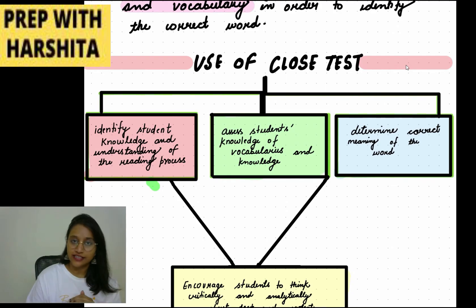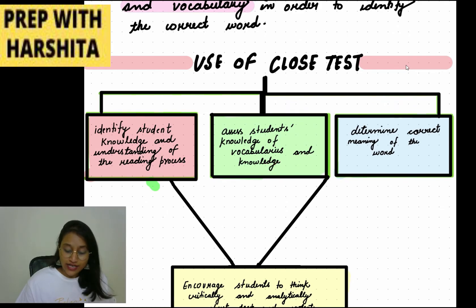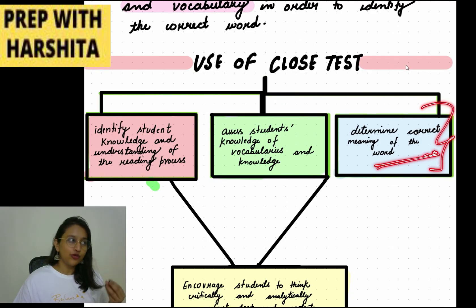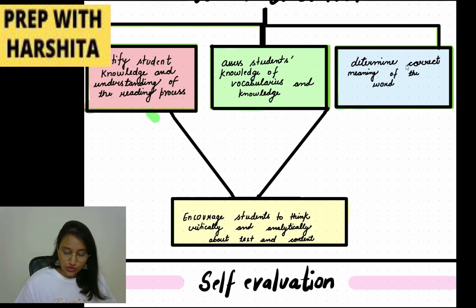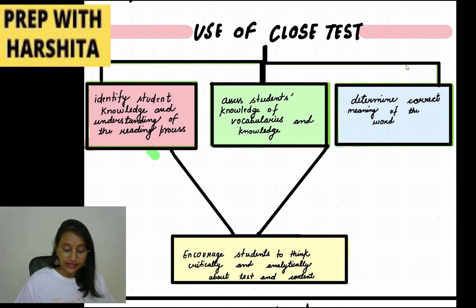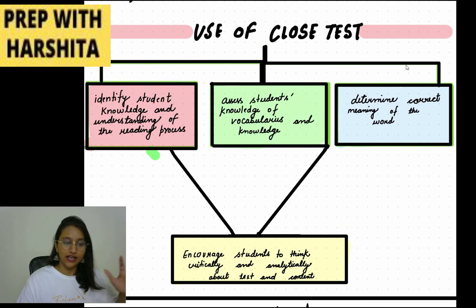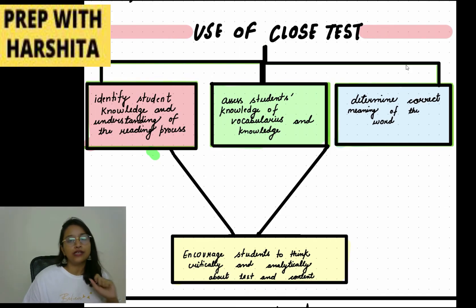You give the child a passage with a word removed and ask them to fill it in. The child needs to know which word it should be, which means their vocabulary will be tested here, directly or indirectly. The correct meaning of the word is determined — you need to know exactly what fits if something is missing. This also encourages students to think critically and analytically about text and content, unlike MCQ where kids might guess. Here, the child needs to think and analyze the text to identify which word belongs.